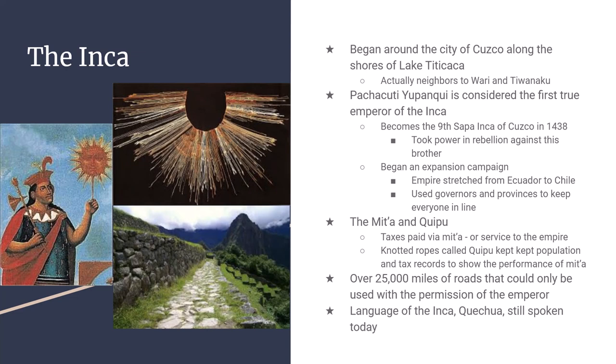The Inca are also known for their remarkable building skills. They constructed stone buildings where the stones fit together perfectly without any cement or concrete, and many of those buildings are still standing today. They also built 25,000 to 30,000 miles of well-kept roads through the Andes, still existing today. These roads were only usable by permission of the emperor — being caught on the official roads without permission was a capital offense.